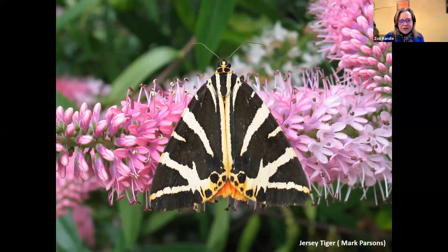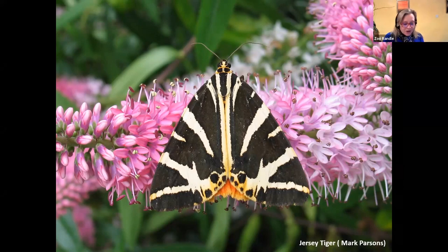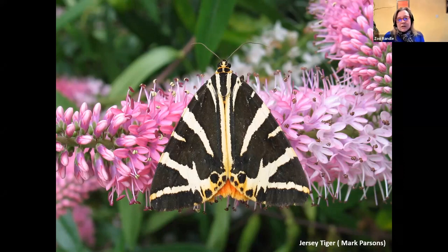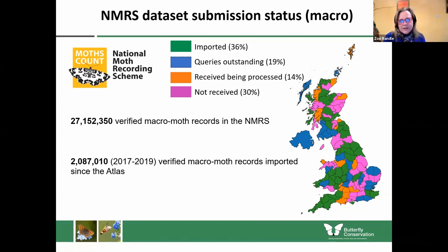Here's a Jersey tiger moth — Jersey tigers had a superb year last year. They are spreading out northwards across the country and expanding their range. I'd be interested to know how far north the furthest record was for 2020, so if anyone's got any answers, pop them in the chat. Many of you will be aware that the moth atlas work put a pause on data import into the National Moth Recording Scheme. Les Hill reinvigorated the dataset import after his furlough period and has been busy sucking in data to the NMRS. We've now got 27.1 million moth records verified in the National Moth Recording Scheme, with 2 million added since the atlas.